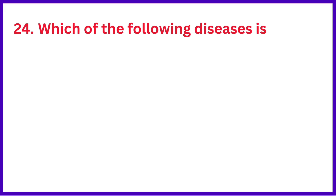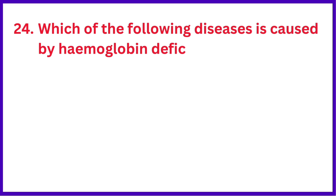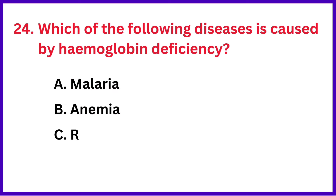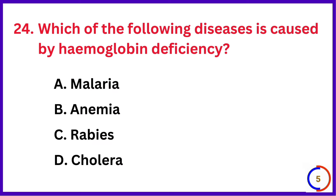Which of the following diseases is caused by haemoglobin deficiency? The correct answer is option B: Anaemia.